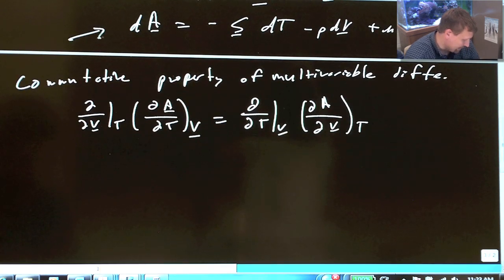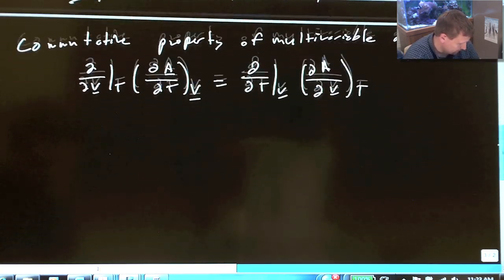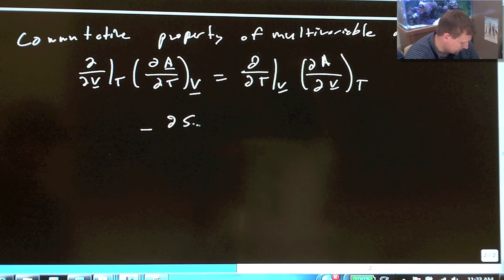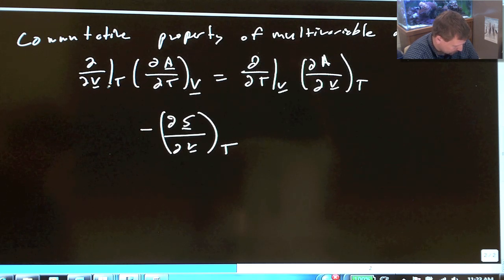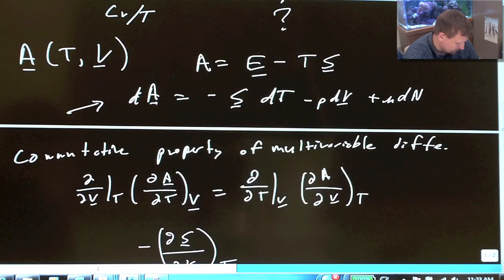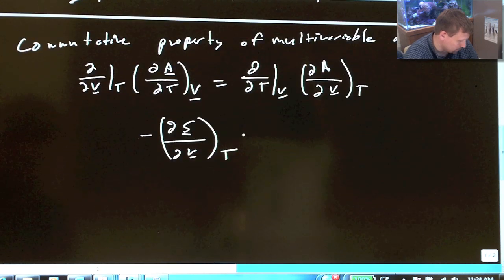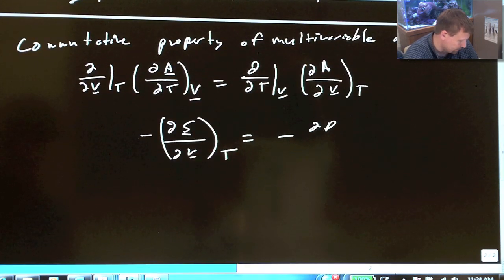When you apply that to this problem, what you end up with is minus del S del V at constant T. Partial by partial T - the V comes from here - del A del T at constant V. Well, that's easy, you just look, del A del T at constant V, this is gone, this is gone, so you have minus S. This equals minus del P del T constant V.